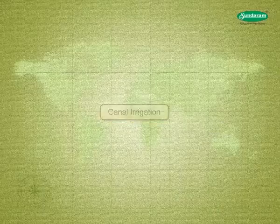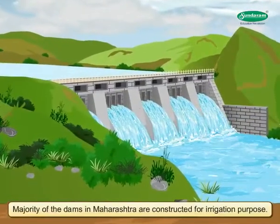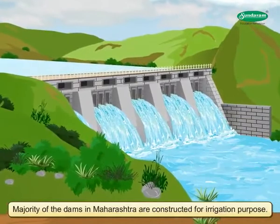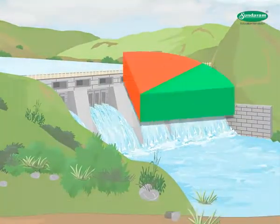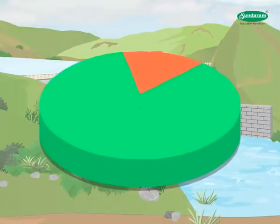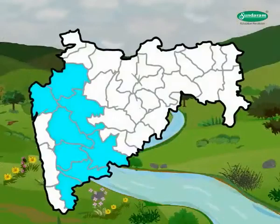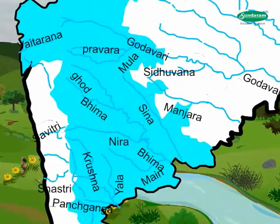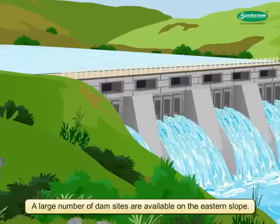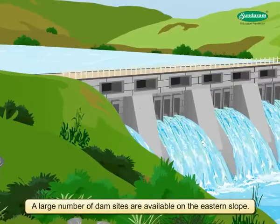Majority of the dams in Maharashtra are constructed for irrigation purposes. Of the total area under irrigation, 22.5% area is irrigated by canals. Western Maharashtra is suitable for irrigation projects because the rivers rise along the eastern slope of the Western Ghats. These are east-flowing rivers and a large number of dam sites are available on the eastern slope.